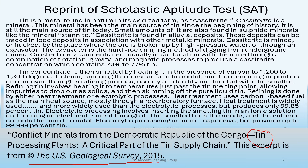So let's go ahead and take a look. Tin is a metal, which you probably already knew, found in nature in its oxidized form of cassiterite. And this cassiterite is a mineral. That's repetitive, but this actually came from the article — I don't know why it's in here twice. This mineral has been the main source of tin since the beginning of history. It is still the main source of tin today. Small amounts of it are also found in the sulfide minerals, like the mineral stannite.